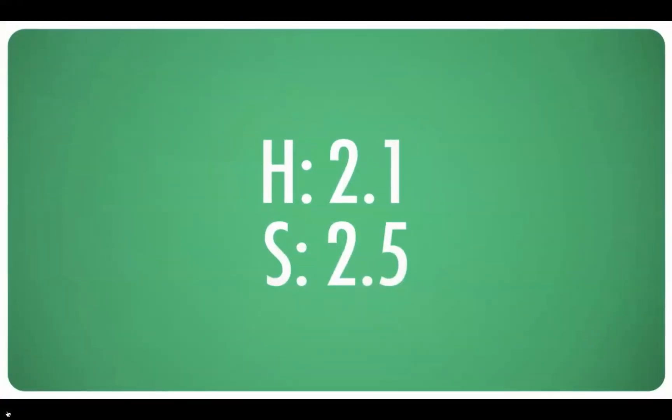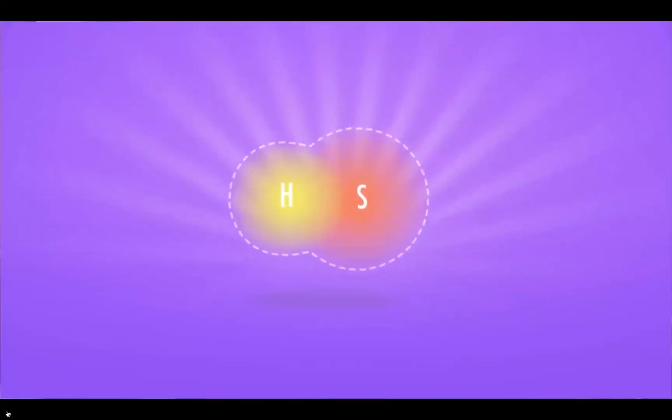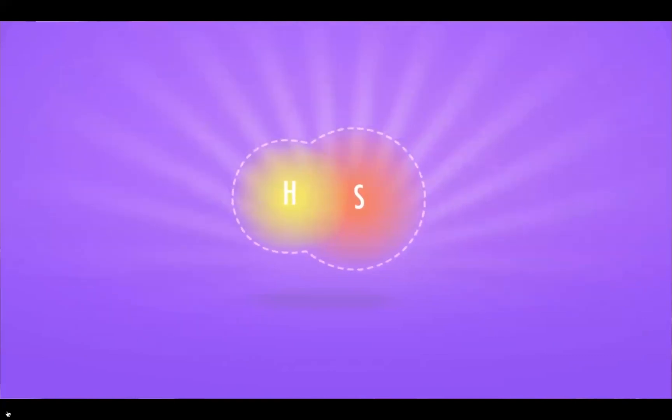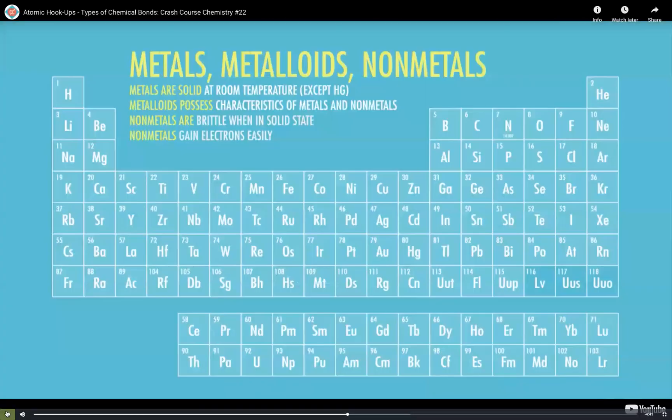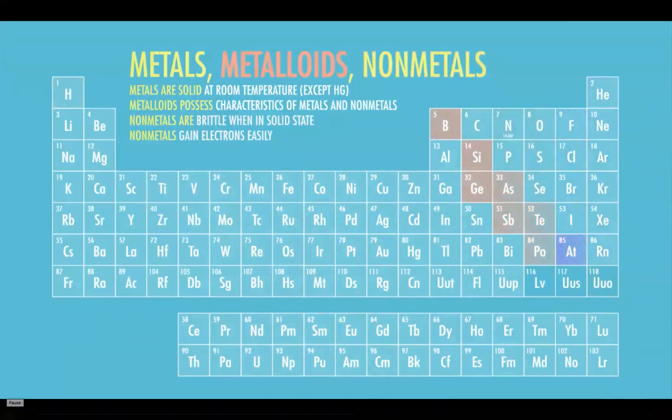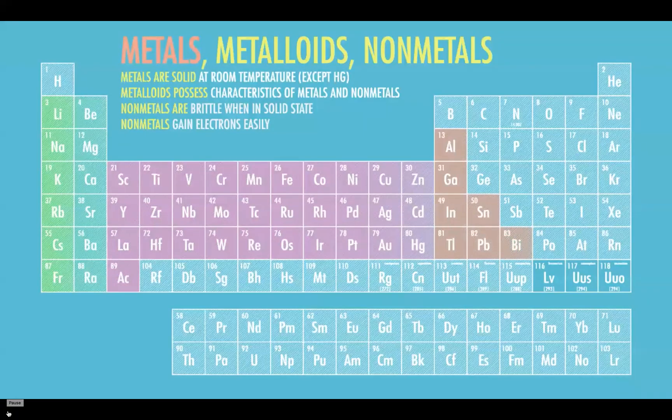There's also a middle option where atoms aren't identical but have very similar electronegativities — like hydrogen at 2.1 and sulfur at 2.5. The difference is so tiny that electrons are pretty much evenly distributed, and we call that a nonpolar covalent bond as well. Covalent bonds tend to form from nonmetals and sometimes metalloids. Most of them hold their electrons so tightly that they're more likely to share them than to gain or lose them altogether.